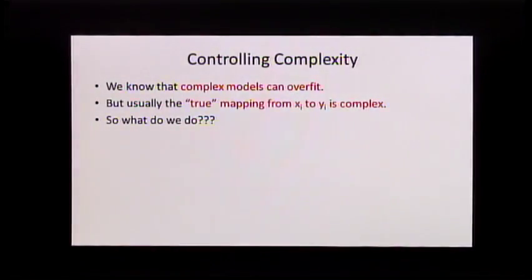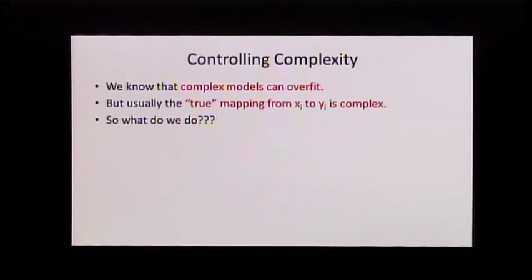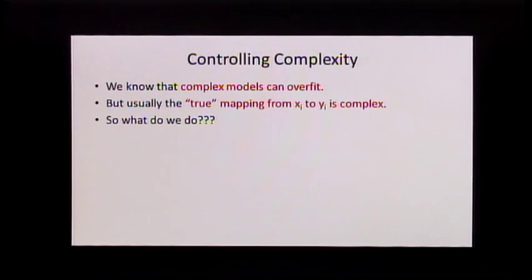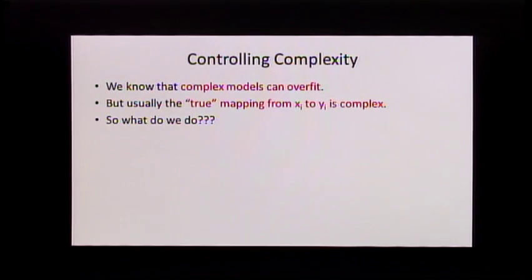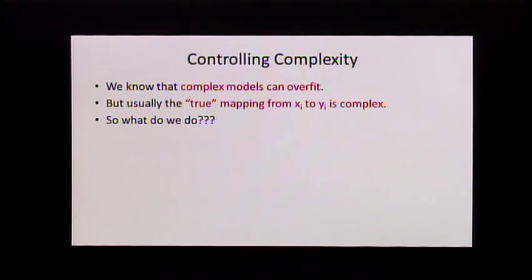We know that if your model is too complicated, you can overfit, and we've said that this is bad — you can fit the training data well but the test data not so well. But usually the true mapping from XI to YI is complex. Usually it's not just a linear model; usually you want something non-linear or with a lot of features. So from what I've told you right now, it's not looking good, because if you add lots of features you're going to overfit, but you need lots of features — sometimes the world is just complicated.